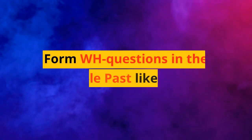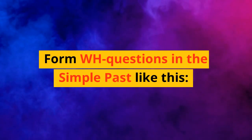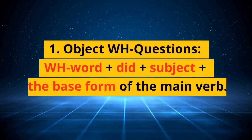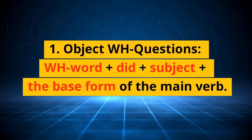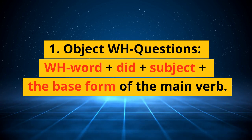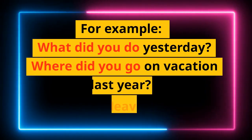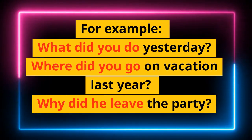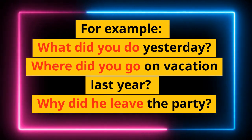Form WH questions in the simple past like this. Object WH questions: WH word, plus did, plus subject, plus the base form of the main verb. For example: What did you do yesterday? Where did you go on vacation last year? Why did you leave the party?